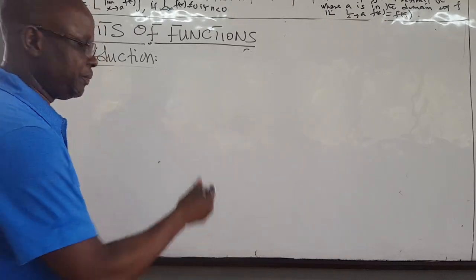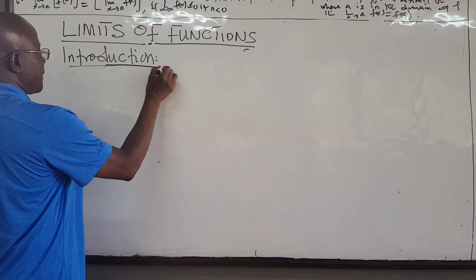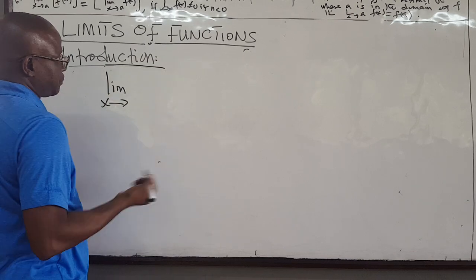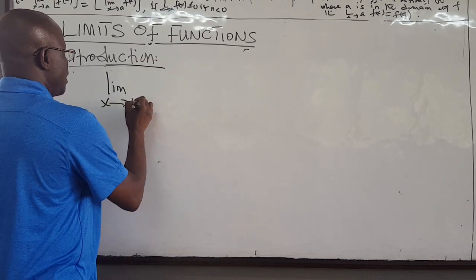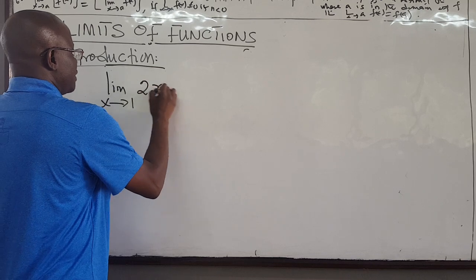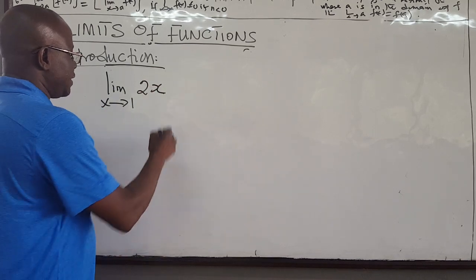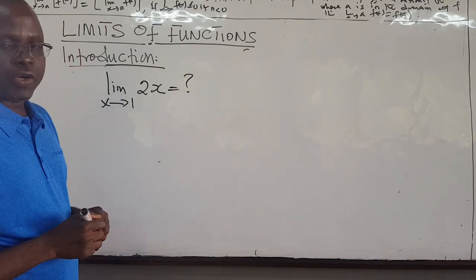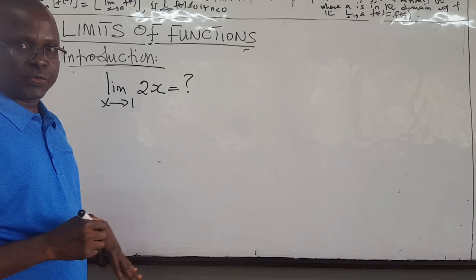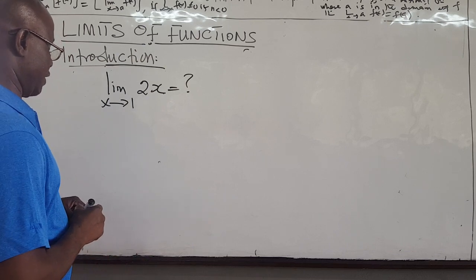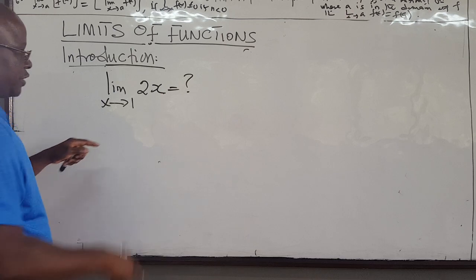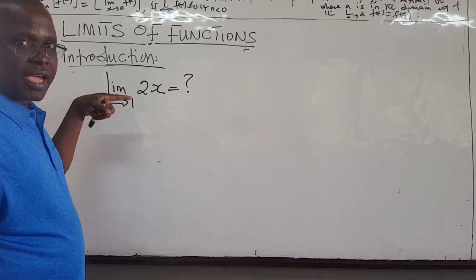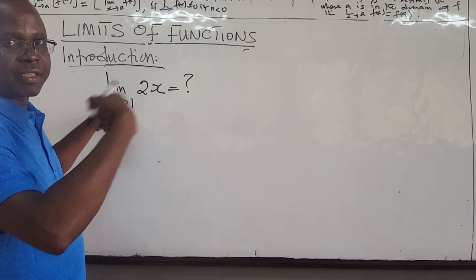We will look at another example — a simple example. We want to find the limit as x approaches 1 of the function f(x) = 2x. What is this limit? We will show that this limit is actually 2 by doing a similar computation as before. We are going to take the limit as x approaches 1 from the left hand side and then from the right hand side.